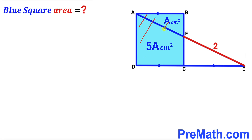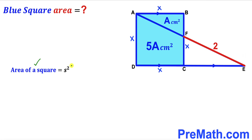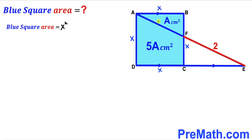Let's focus on the blue shaded square ABCD. I'm going to label its side length as x, so all four sides are x. Since we want the area of this square, we recall the area formula: Area = s², where s is the side length. So the blue square area equals x². Furthermore, the total area of the blue shaded square equals A + 5A cm².